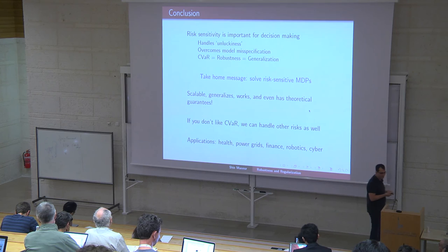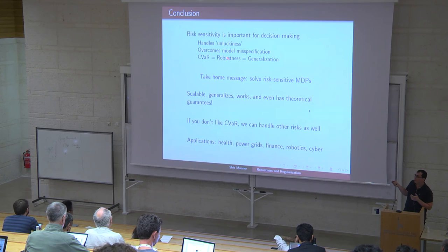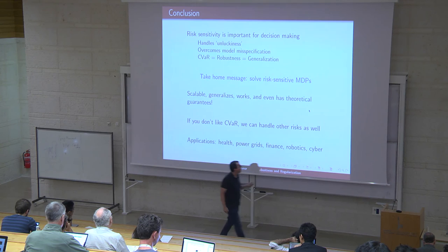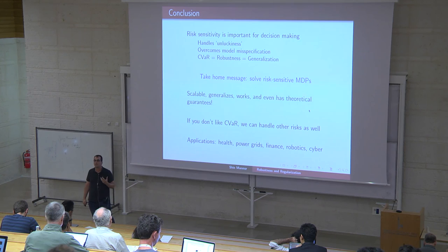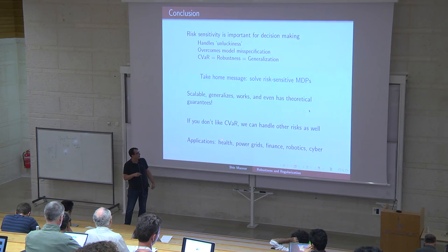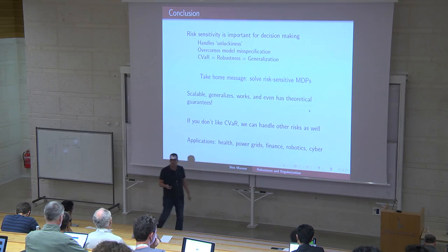To conclude: risk sensitivity is crucial to decision making. The main message is that if you want to generalize, you need to be robust. If you want to be robust to some perturbation, you can solve CVaR. If you're not happy with CVaR, there are other risk measures to consider — but any problem you solve, as long as you want to generalize, is going to be a risk-sensitivity problem. There are cool applications in health, robotics, cyber, and finance. Thank you.